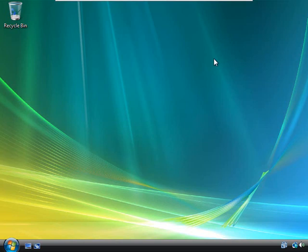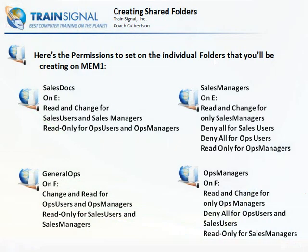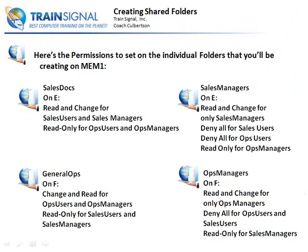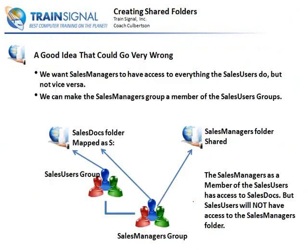We've completed this section. In the next section, I want to talk about a really good idea that might end up going very wrong for you. Here's the situation — we want sales managers to have access to everything that the sales users do, and that's where things can get complicated with nested group permissions.